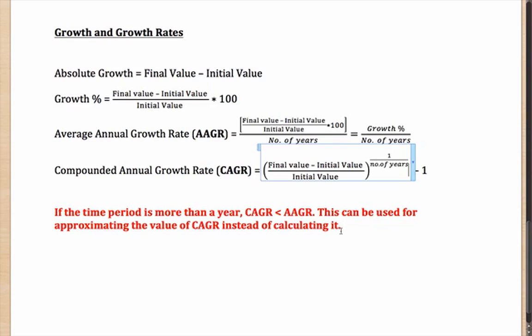What I mean by this is, let's say you are given a question in which you have to find out the CAGR. Difficult calculation, I agree with you. What you should do is find out the AAGR and take a value which is little lesser than that. That will also lead you to the correct answer because the CAGR is always always lesser than the AAGR. This might help you eliminate a couple of options.